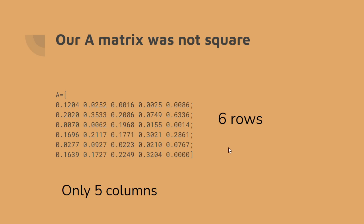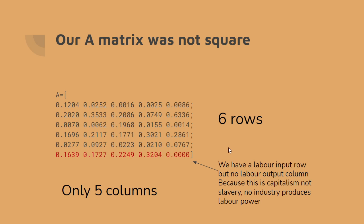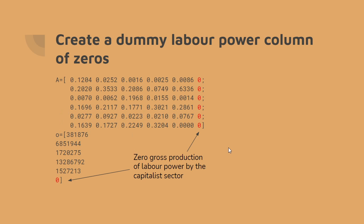Why did it have five columns and six rows? Because it had four internal columns for industrial sectors in the EU: agriculture, industry, construction and services, plus a fifth one which was the foreign trade sector. But it had six rows because it had the labour used as well. We end up trying to do something that you can only do with a square matrix, with a six by five matrix. I kept being caught out by these runtime errors. A typed language would have detected this earlier. But it actually points to a real economic phenomenon. We've got this labour input row, but no labour output column. That's because this is capitalism, not slavery. So there's no industry producing labour power.